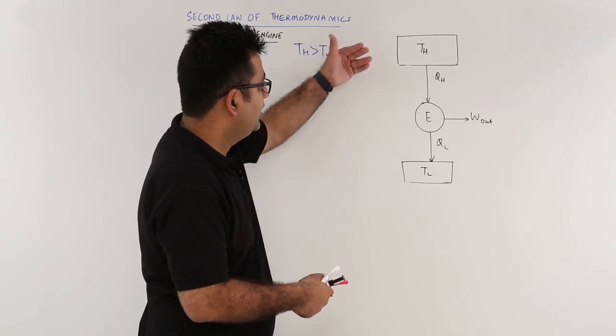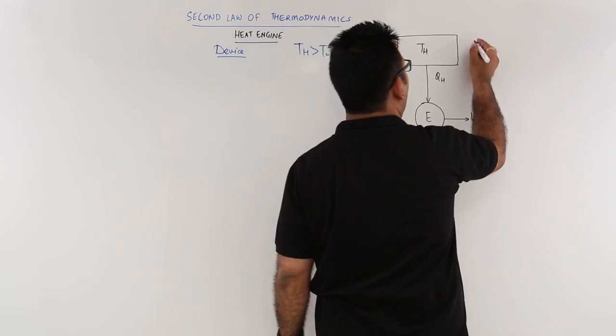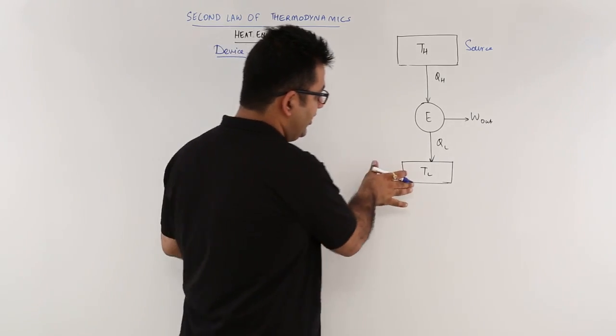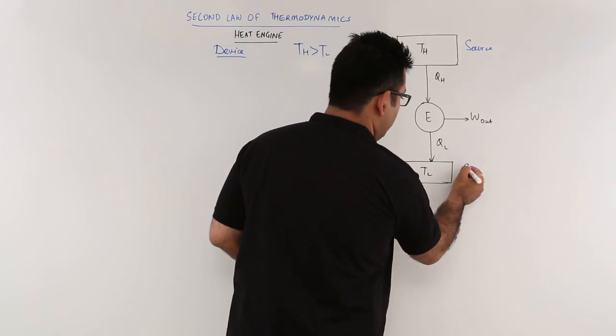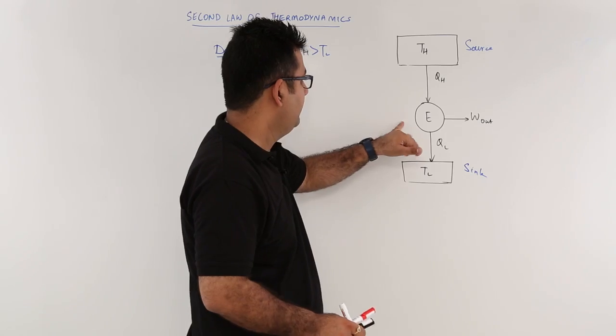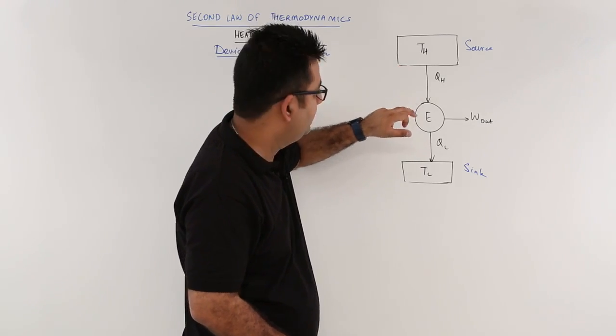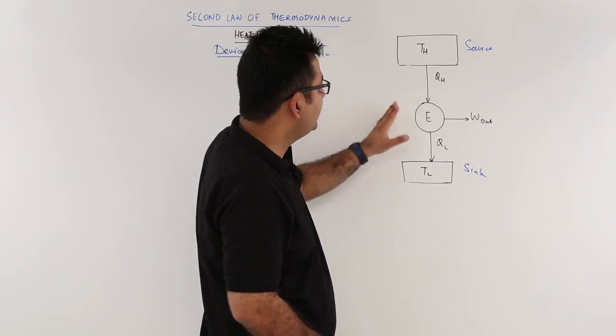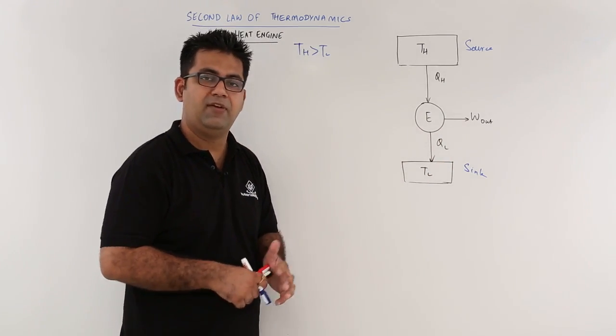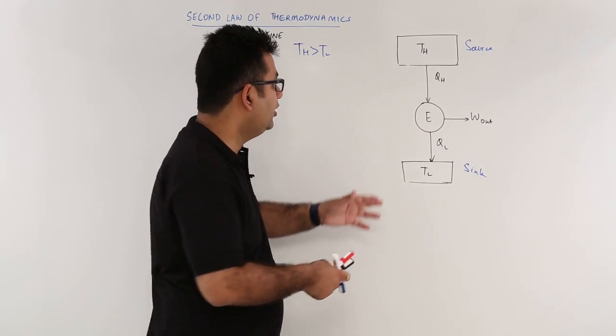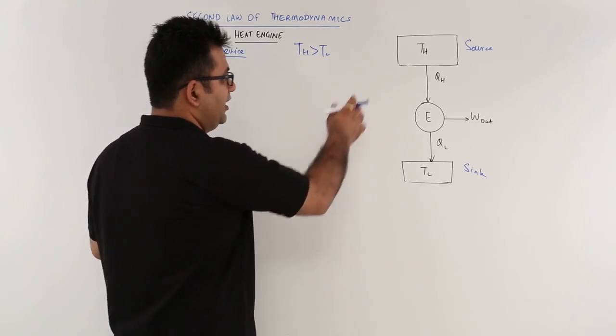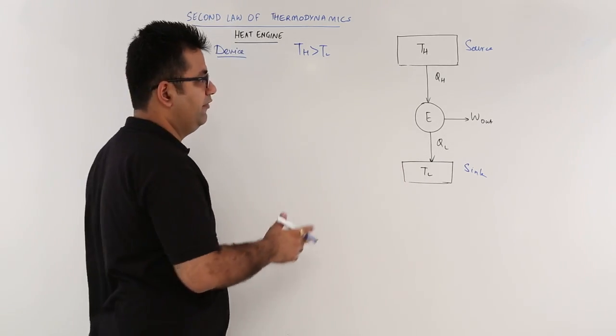So the reservoir from which the heat starts to flow is also called the heat source, and this is where you are rejecting your heat, so this becomes your heat sink. Now from heat source this heat engine absorbs some energy in the form of heat, it utilizes some amount of that heat energy and gives out some work output, and whatever part is left which is not converted into work output is thrown out in the heat sink. So this is a very simplistic schematic of a heat engine.